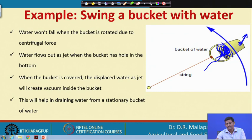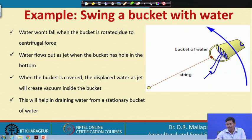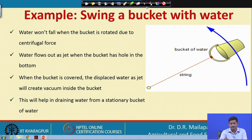Similarly, in a centrifugal pump this vacuum influences the intake of fluid from the suction side. If the top is closed, the bottom is open, and the top is connected to a pipe providing continuous water supply, then as you rotate, water continuously flows in and you get a continuous flow out. This same principle operates in a centrifugal pump.